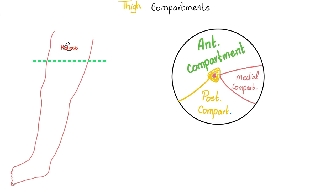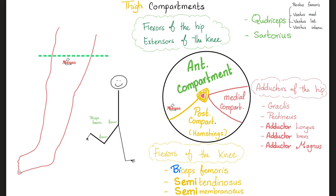Now let's talk about thigh compartments. Imagine that I took a slice of your thigh. What's the name of the big bone in the middle? This is the femur. In front of it, you have an anterior compartment. Behind it, there's a posterior compartment. There's also a medial compartment closer to the midline. The anterior compartment is going to flex the hip and extend the knee. The medial compartments are the adductors of the hip. The posterior compartment — the hamstring muscles — are the flexors of the knee.